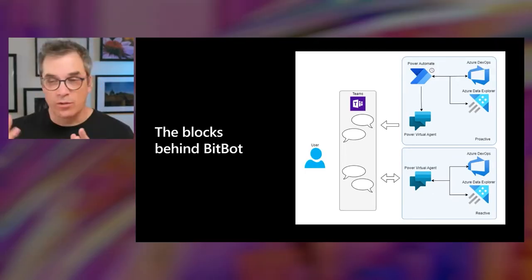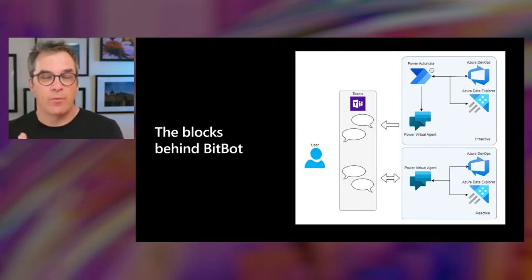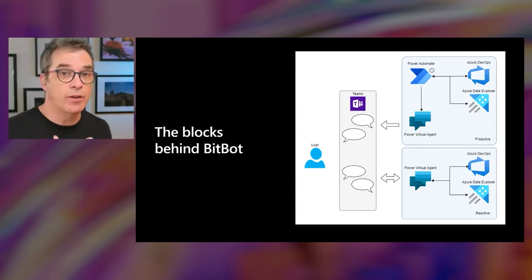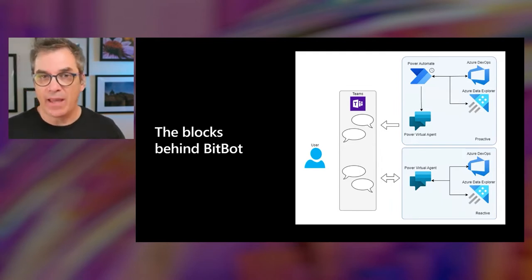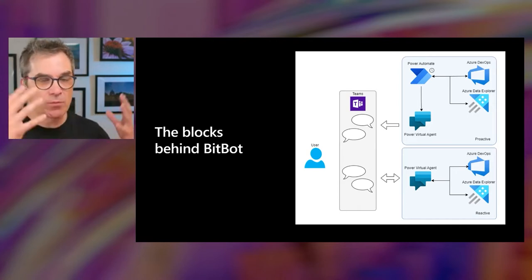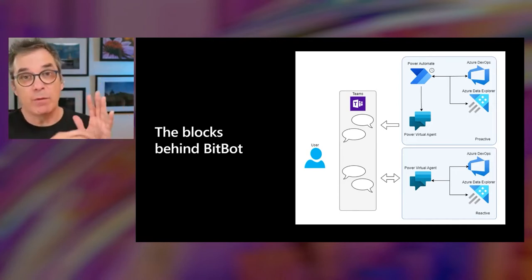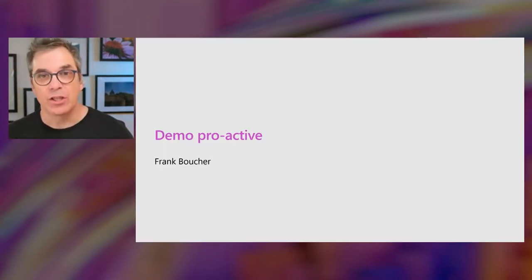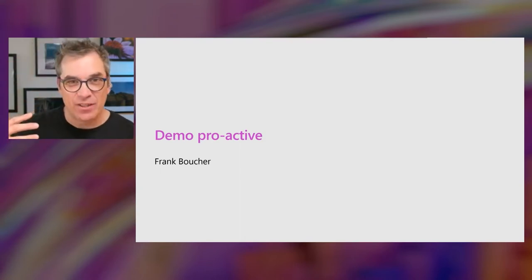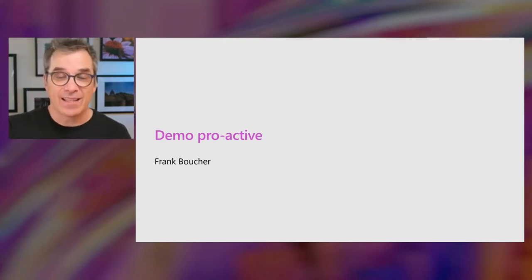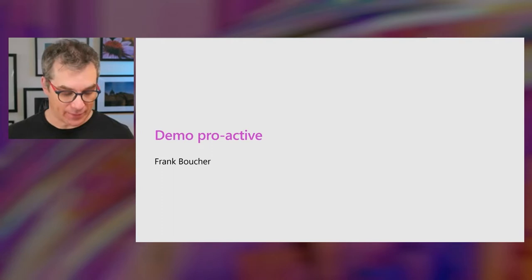Let me explain the proactive component — that's the top right part of the schema on your screen. Most of the time when we interact with a chatbot, we as humans start the dialogue. But in this case, we wanted the bot to initiate the conversation — perhaps on a schedule — by running an Azure DevOps query and, based on the results, reaching out directly to a list of people. In our next demo, I want to show what happens when tasks in Azure DevOps are missing information — like a missing email — and how we notify users about that proactively.